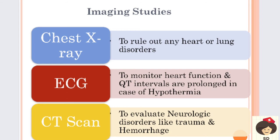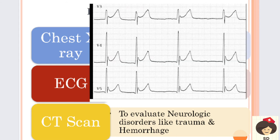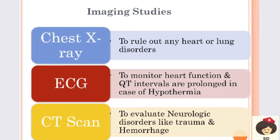ECG (electrocardiogram) - the QT interval will be prolonged when the patient has hypothermia. You know PQRST is the component of the electrocardiogram - here the QT interval will be prolonged. CT scan is done for evaluating any neurological disorders like trauma and hemorrhage, since CNS disorders can also cause hypothermia due to impaired thermoregulation.